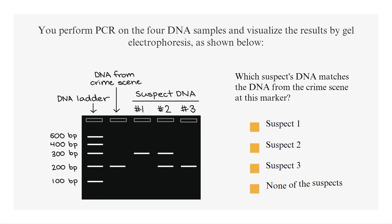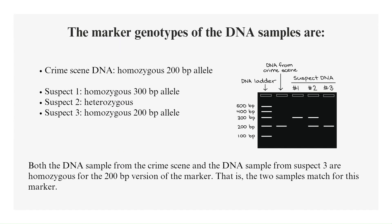You perform PCR on the four DNA samples and visualize the results by gel electrophoresis, as shown here. The marker genotypes of the DNA samples are: Crime scene DNA — homozygous 200 base pair allele; Suspect 1 — homozygous 300 base pair allele; Suspect 2 — heterozygous; Suspect 3 — homozygous 200 base pair allele. Both the DNA sample from the crime scene and the DNA sample from Suspect 3 are homozygous for the 200 base pair version of the marker — the two samples match for this marker.